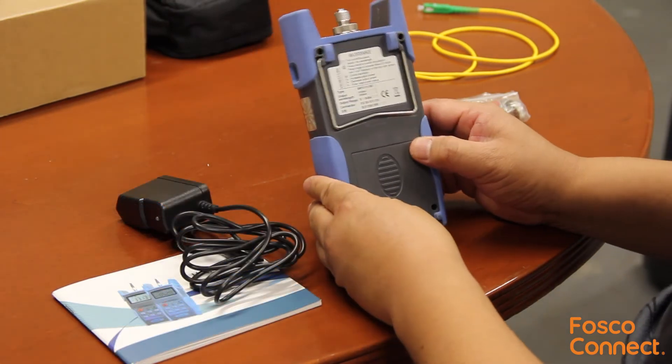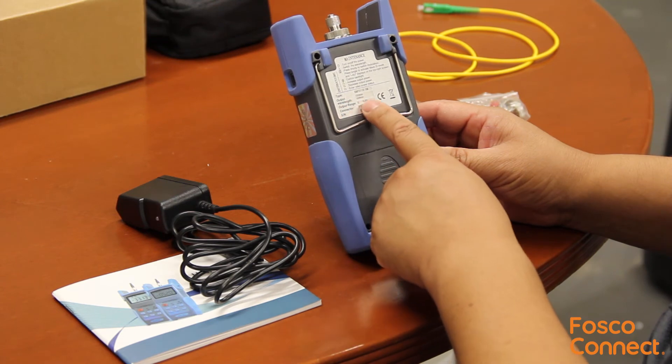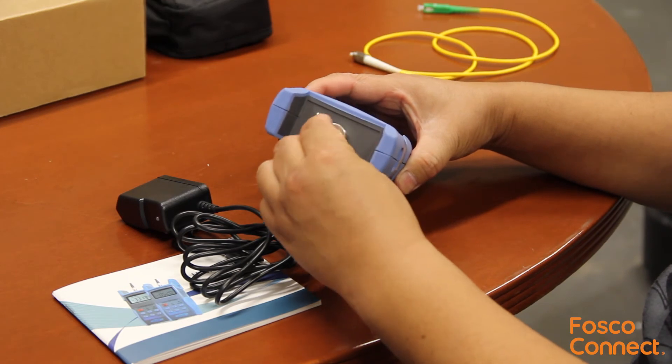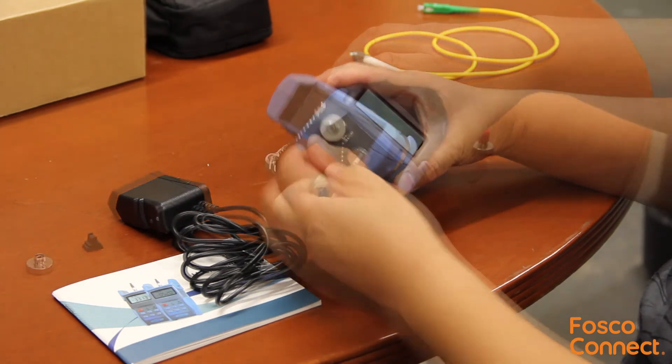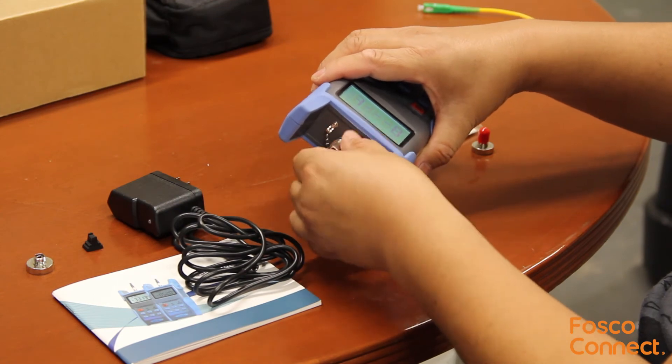At the back there is some model information. The power output range is 0 dBm to negative 8 dBm. Now let's show you how to change the adapter. We can screw off the FC adapter and put on the ST adapter or the SC adapter.